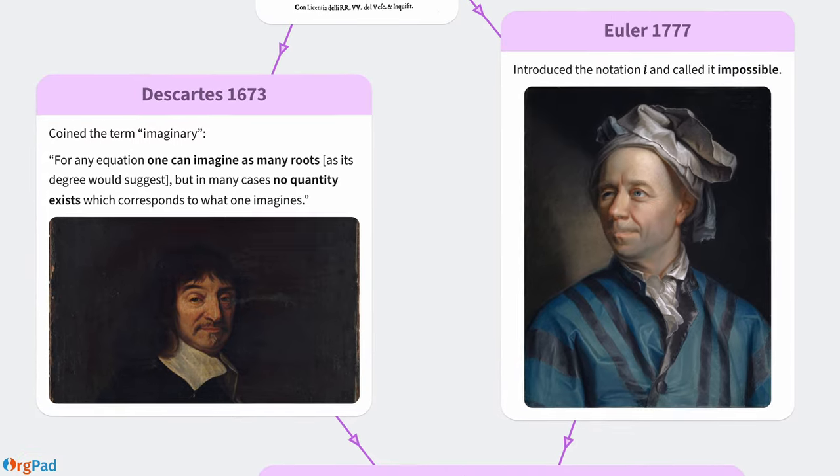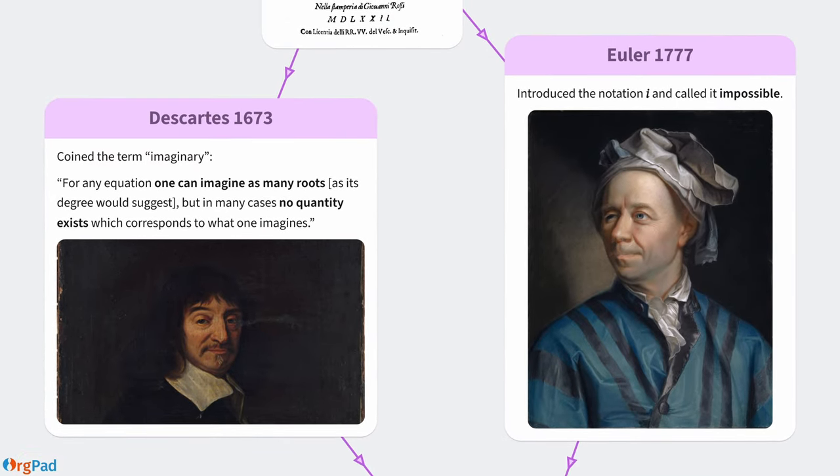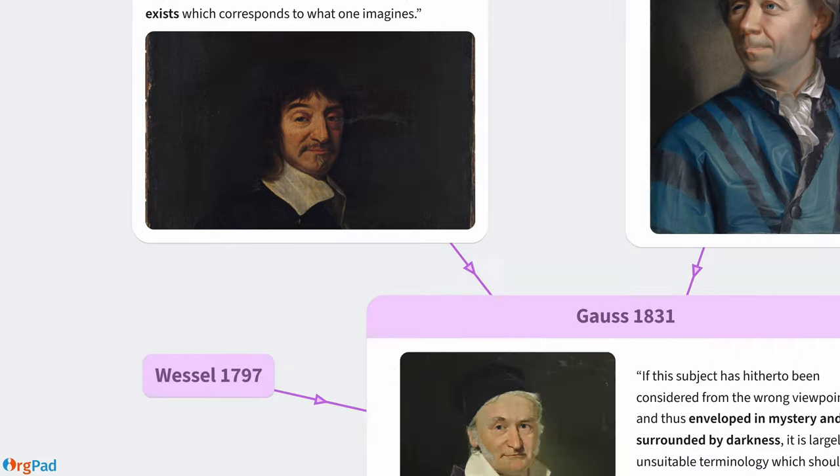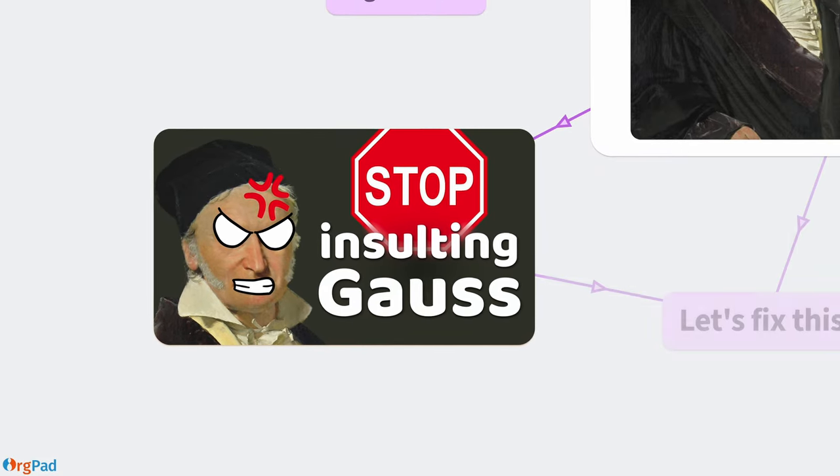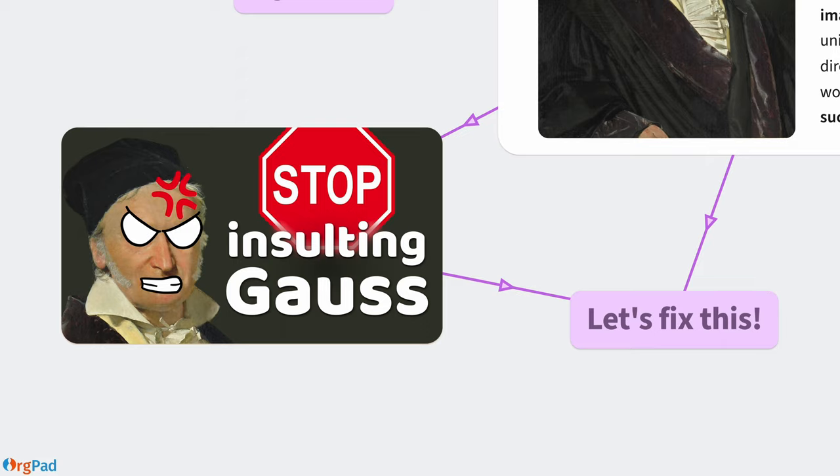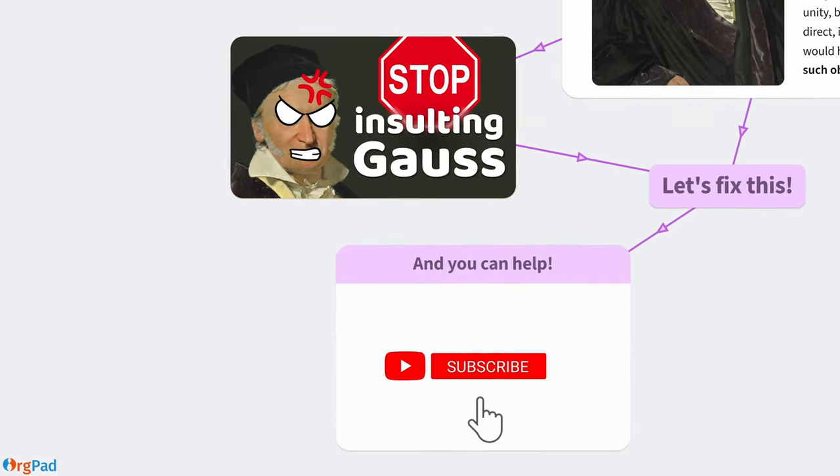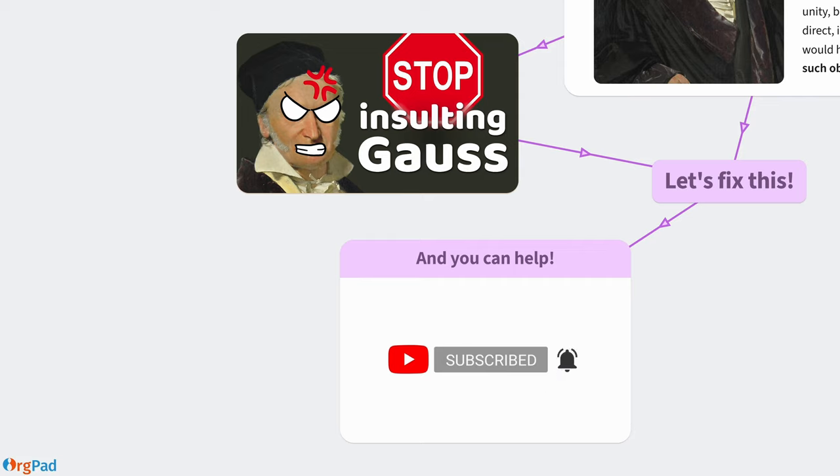Traveling back in time to Descartes and Euler, it makes sense that imaginary numbers raised eyebrows and doubts. But thanks to Gauss's brilliant insights, we can no longer use ignorance as an excuse. Yet, even after 200 years, the Gauss's work is still misunderstood, and he is furious about that. Let's fix it in this video. With the great power of the internet, you can help by watching, liking, and adding some comments so we can together beat the almighty YouTube algorithm. Please share this video with your family and friends, educate your grandma, and explain it even to your dog.